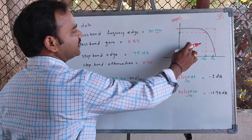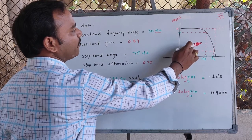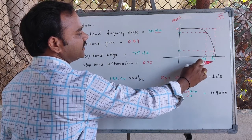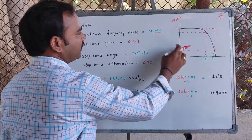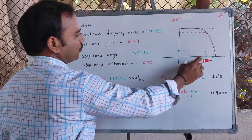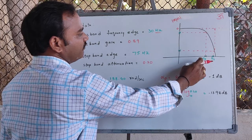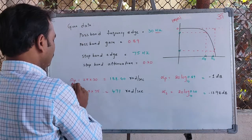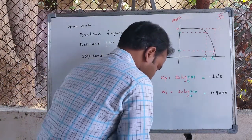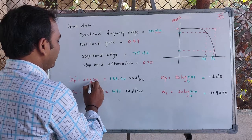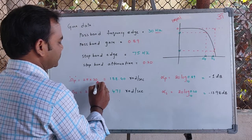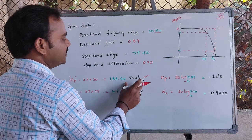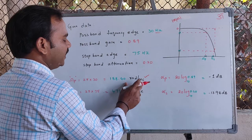This is the magnitude characteristics of the low pass Butterworth filter. The frequency axis is in radians per second, but the given frequency is in Hertz. So first we will find the passband frequency in radians per second: Ω_P = 2π × 30 Hz = 188.40 radians per second.